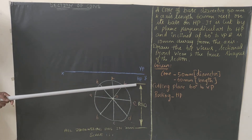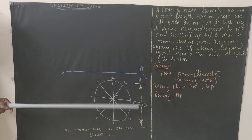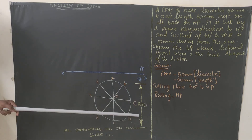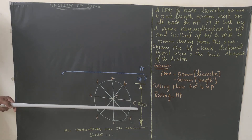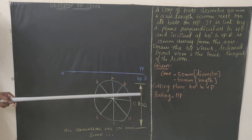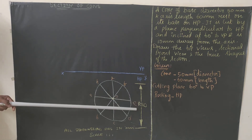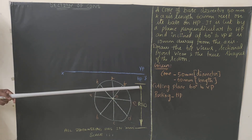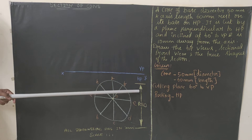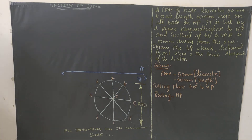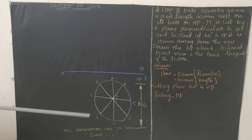The extension lines should be drawn with 2H pencil, and the dimensioning lines should be with H pencil. The arrowhead and dimension value 50 should be written with HB pencil. As of now we have drawn the top view of the cone. Now we'll extend all the points so that we can get the front view of the cone.